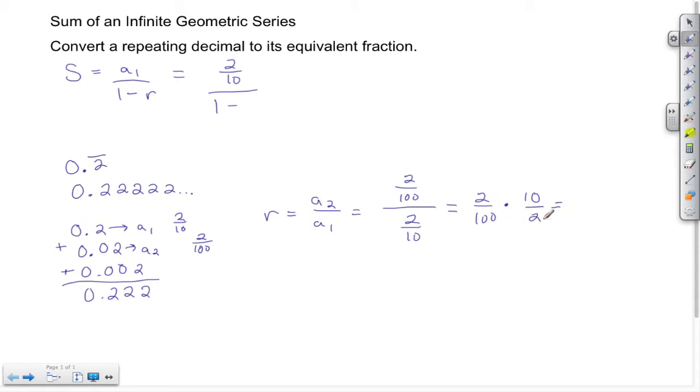The reciprocal just means to flip the fraction. Here I have 2/10, and that becomes 10/2. Before I multiply, I'm going to cross cancel. I have common factors of 2 here, so 2 divided by 2 is 1. For these two factors here, I have a common factor of 10, so I can divide that by 10. Ten divided by 10 gives me 1, and then 100 divided by 10 gives me 10.